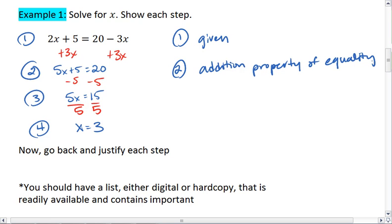We were able to add 3x to both sides. The third statement is true because of the subtraction property of equality. We were able to subtract 5 from both sides.